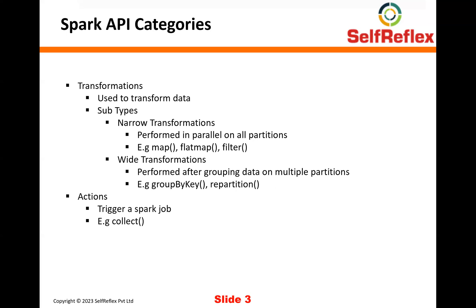There is another category of transformations called wide transformations. Here, your partitions are not independent of each other. For example, group by key — in this case, you need to bring data of all the keys from all the partitions that have the same key together, and only then you can apply this transformation. So you cannot actually process all the partitions in parallel. First, you need to bring all the data belonging to the same key together at one place, and then you can apply this transformation. Hence, these are called wide transformations.